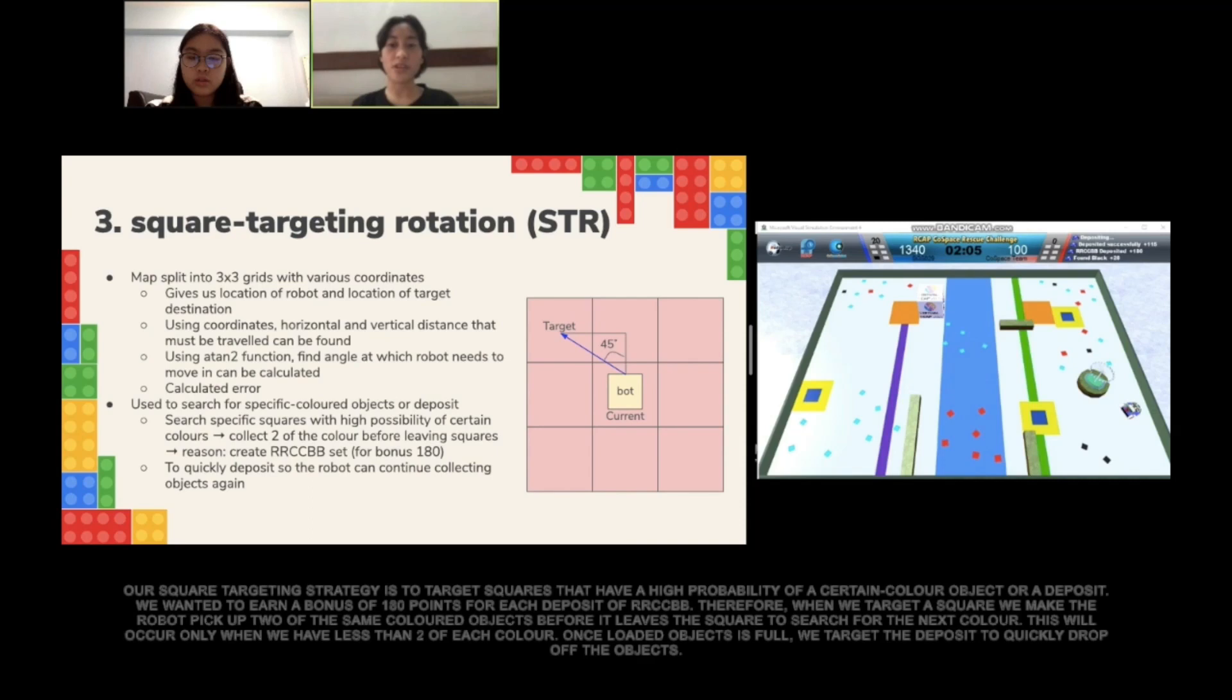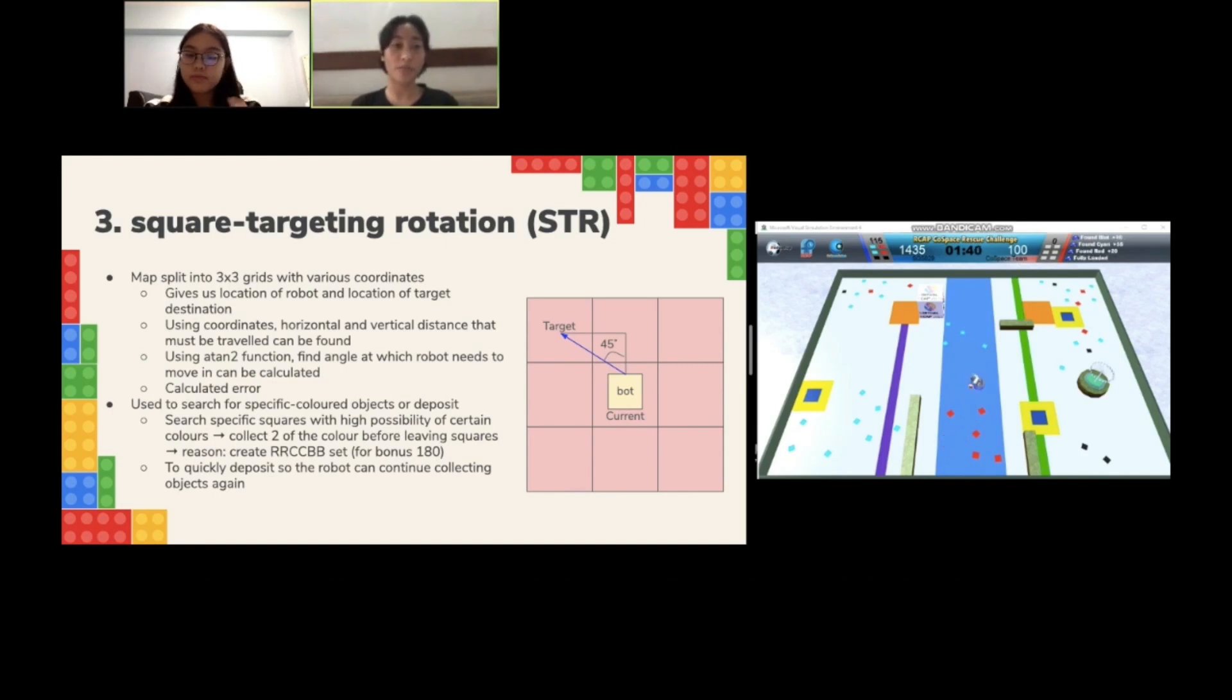Our square targeting strategy is to target squares that have a high probability of a certain color object for our deposit. We wanted to earn a bonus of 180 points for each deposit. Therefore, when we target a square, we make the robot pick up two of the same colored objects before it can use the square to deposit the particular color. This will occur only when we have less than two of the colors. Once loaded object is full, we target the deposit to quickly drop off the objects.